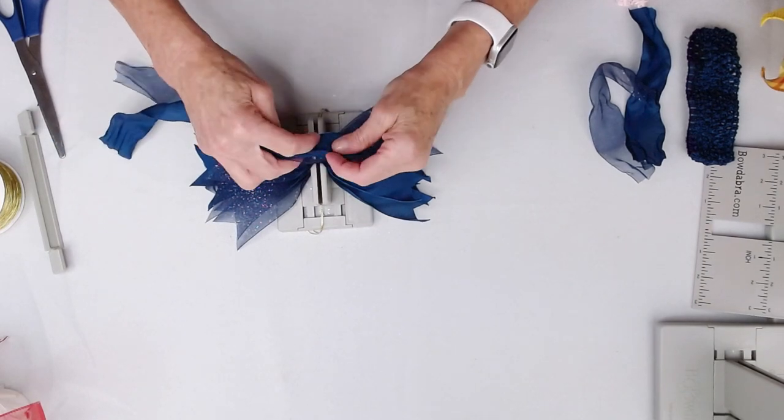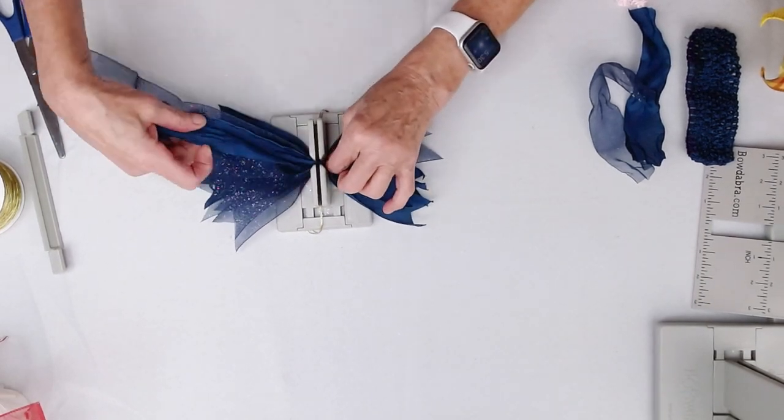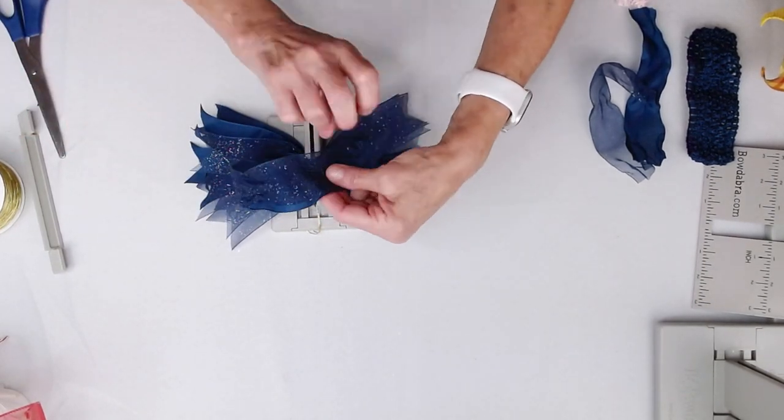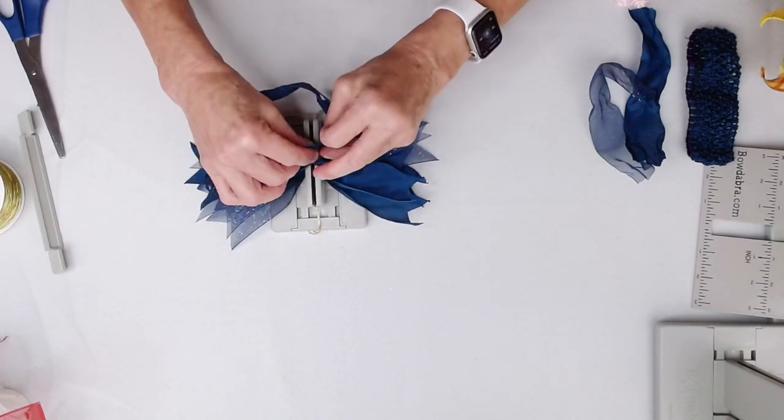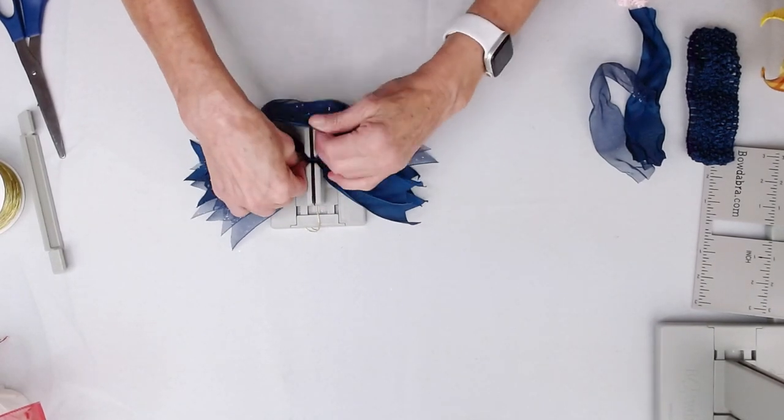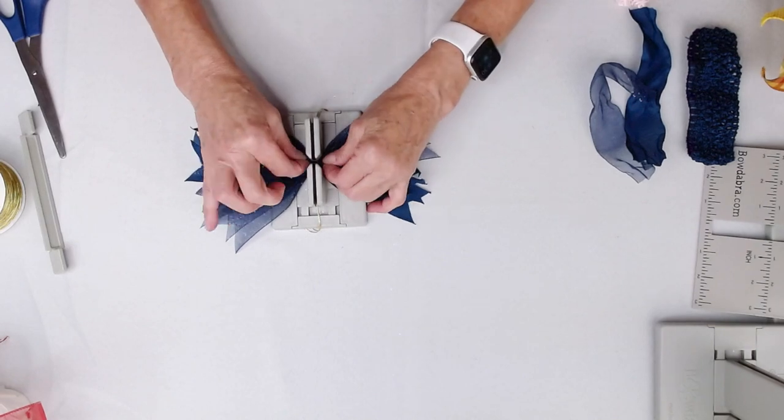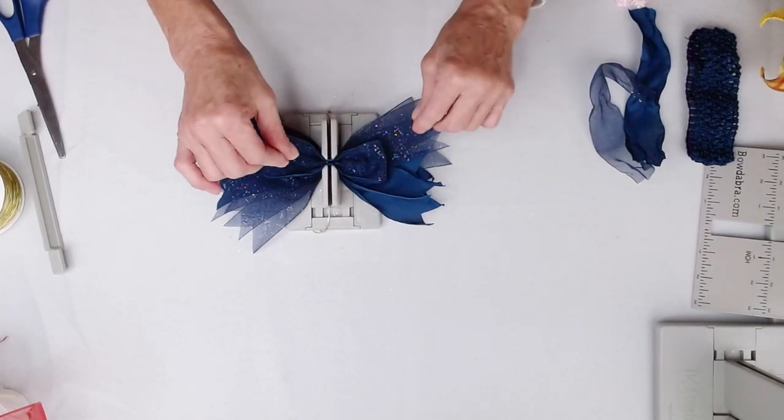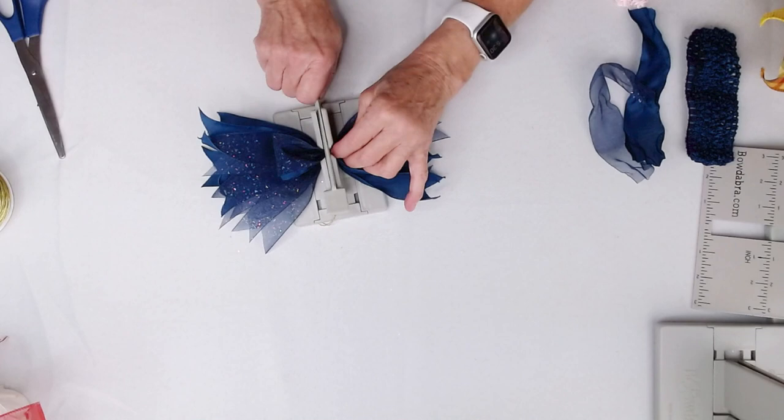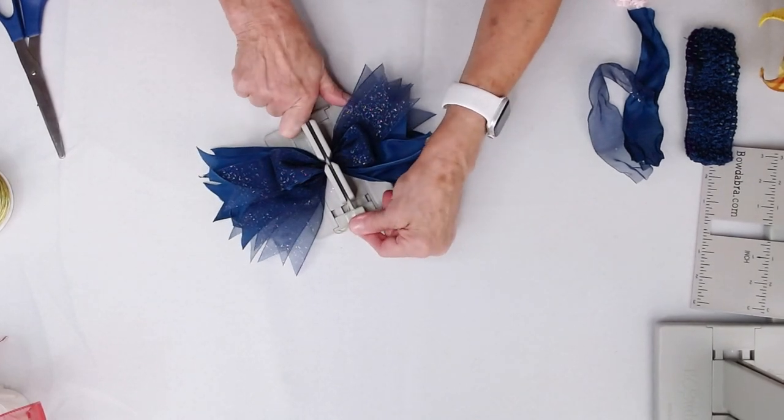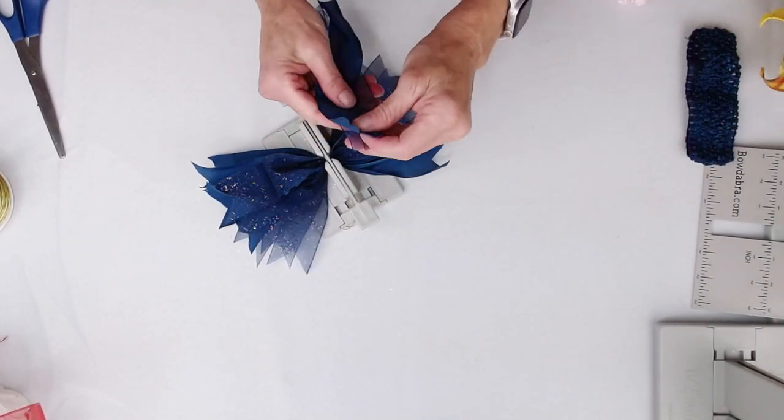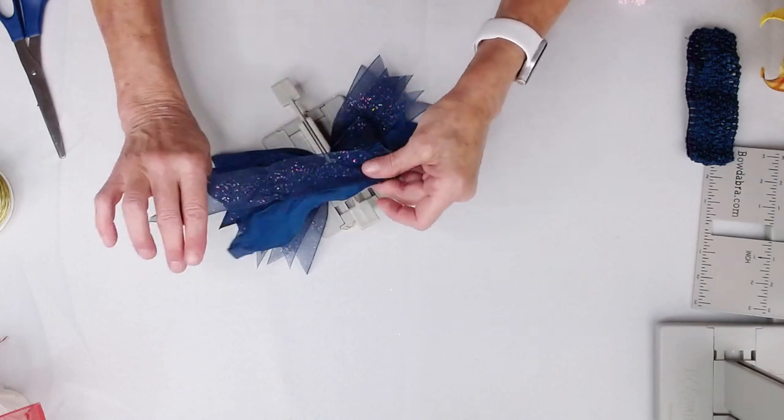So we're just going to take the right side of this ribbon, put this down in here, fold it back over and I'm just going to take the right side, scrunch that in and then go to the center and just scrunch that in there. I'm going to take my bowdabra wand and just give everything a really good push and hold it in there while I take my next ribbon.